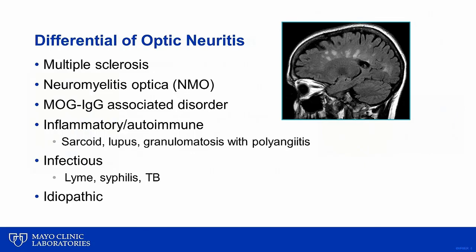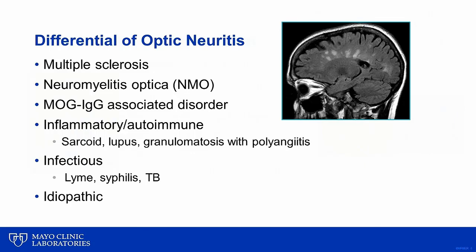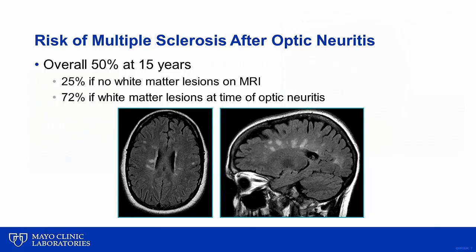The differential diagnosis of optic neuritis is broad. The majority of cases in the Western world are caused by multiple sclerosis or are idiopathic. The ONTT found that at 15 years, 50% of patients with optic neuritis would develop multiple sclerosis. The MRI brain at the time of the optic neuritis helped stratify this risk, with 72% of patients developing MS if there are white matter lesions, while the risk is only 25% if there are no white matter lesions.